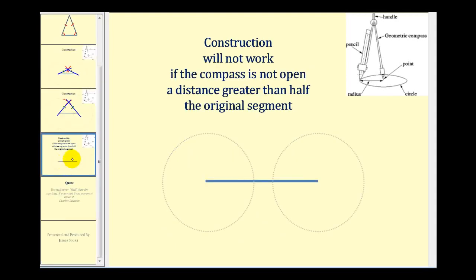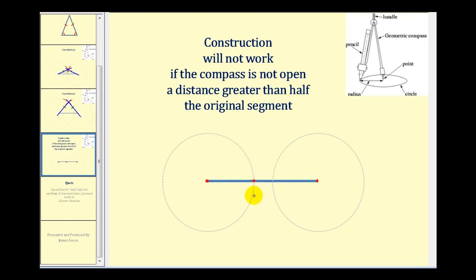One more important point: the radius of the compass must be greater than half the length of the segment. Here's an example of why. If we place the compass so the pencil does not extend past the midpoint of the segment, and swing arcs from both endpoints without adjusting the compass, the arcs will not intersect — because the radius is not greater than half the length of the segment.